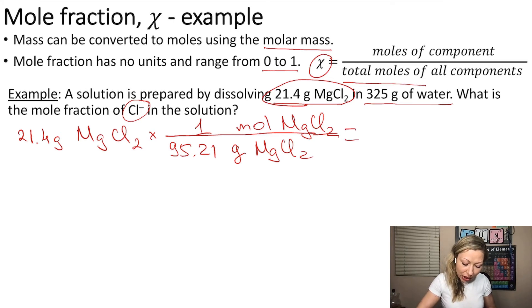If you do this calculation, the grams will cancel out, and we get 0.225 moles of MgCl2.